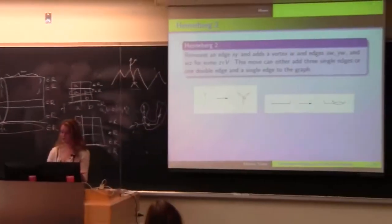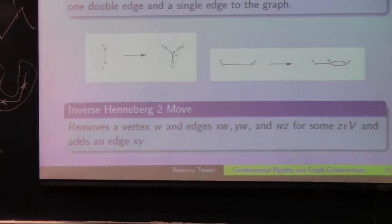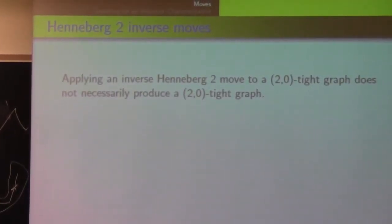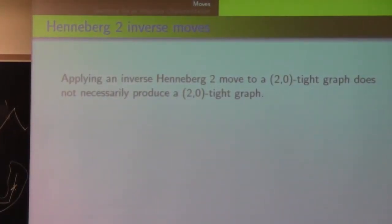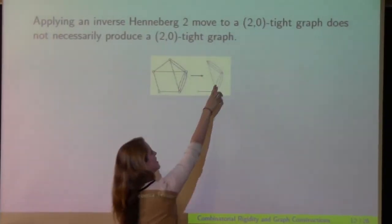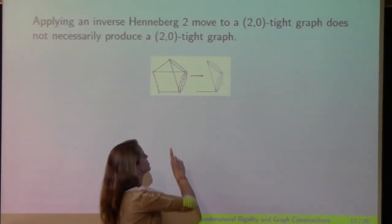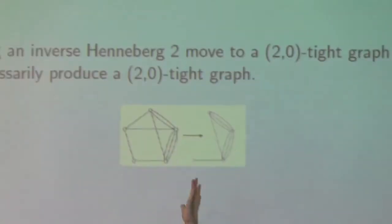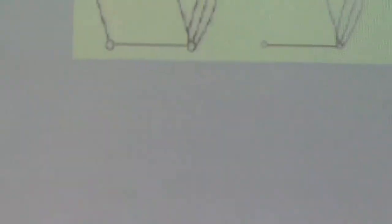As well, the inverse move works in the same way. You're removing a vertex of degree 3 and adding back in an edge. So one of the things about a Henneberg 2 inverse move is that applying this move does not always preserve the 2-0-tight graph property. So as I said before, there's subgraph conditions for a graph to be 2-0-tight. And for example, if we do a Henneberg 2 move on this vertex here and add in a triple edge over here, then this subgraph is a 2-1 graph and not a 2-0 subgraph anymore. So it violates the subgraph condition.